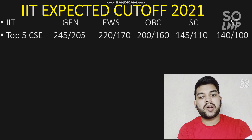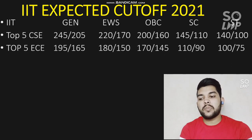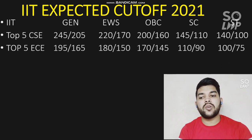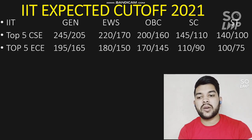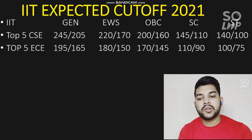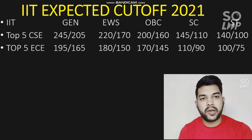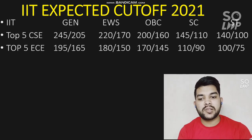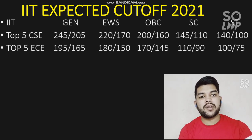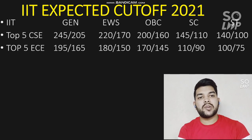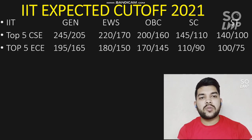For top 5 IIT with EC branch: General male needs 195, female 165. For EWS: 180 and 150 marks. For OBC: 170 and 145 marks. For SC: 110 and 90 marks. For ST: 175 marks.